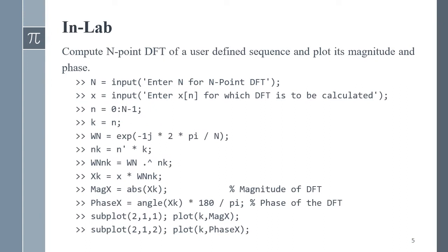Let's define the Discrete Fourier Transform using MATLAB. First, compute the N-point DFT of a user-defined sequence and then plot its magnitude and phase. We define capital N from the user using the command 'input N', which is used for the N-point DFT. Then we take the sequence from the user using the command 'input'. We define an array small n varying from zero till N minus one, and k also varies from zero to N minus one, so k is also equal to n. We then define omega_n as the exponential e raised to power minus j two pi divided by capital N.